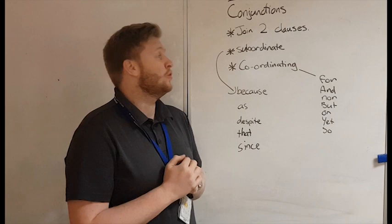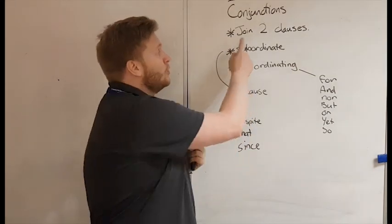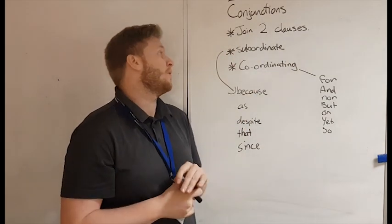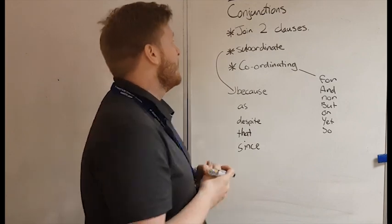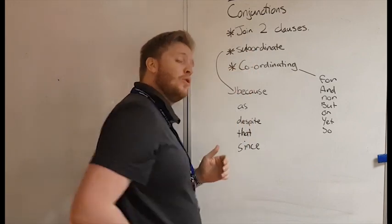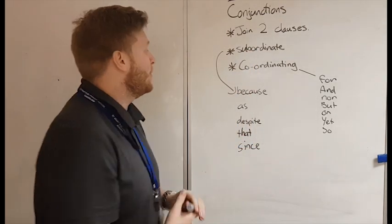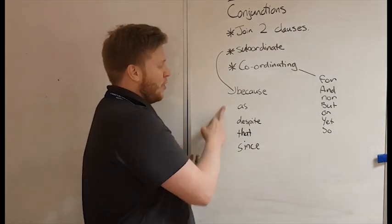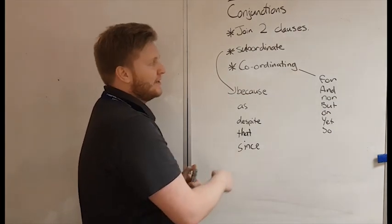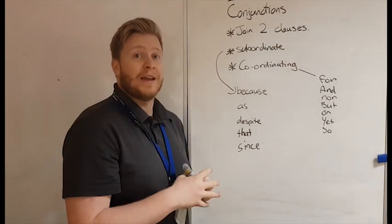Now we're looking at conjunctions and what they're used for is to join two different clauses, whether it would be main, subordinate, whatever. And we have subordinating clauses that joins a main clause to a subordinate clause. So we have things like because, as, despite, that, since. When we add those, they make complex sentences.